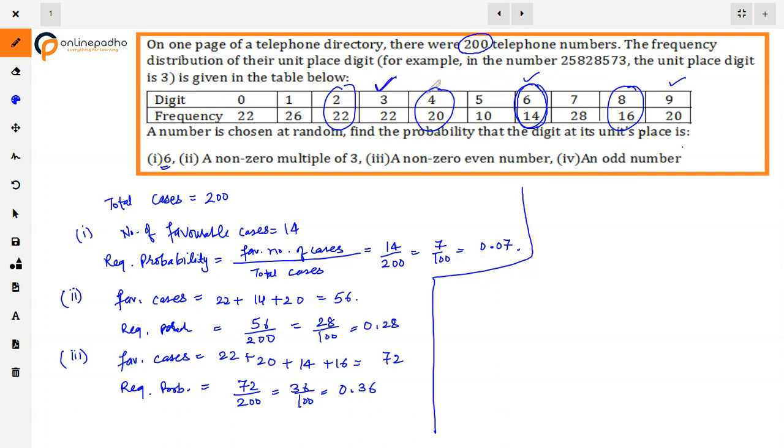The fourth part is odd numbers: 1, 3, 5, 7, or 9. We add the favorable cases: 26 plus 22 plus 10 plus 28 plus 20, which equals 106. The required probability is 106 divided by 200, which is 53 by 100, or 0.53. Thank you.